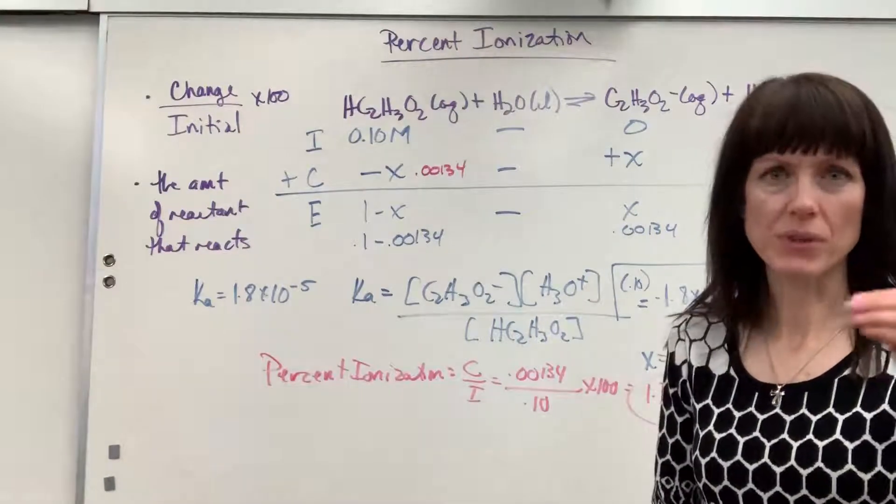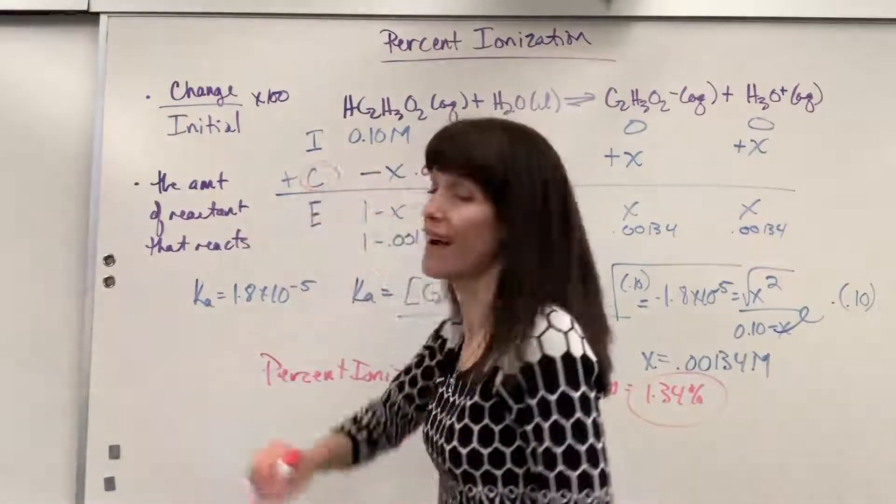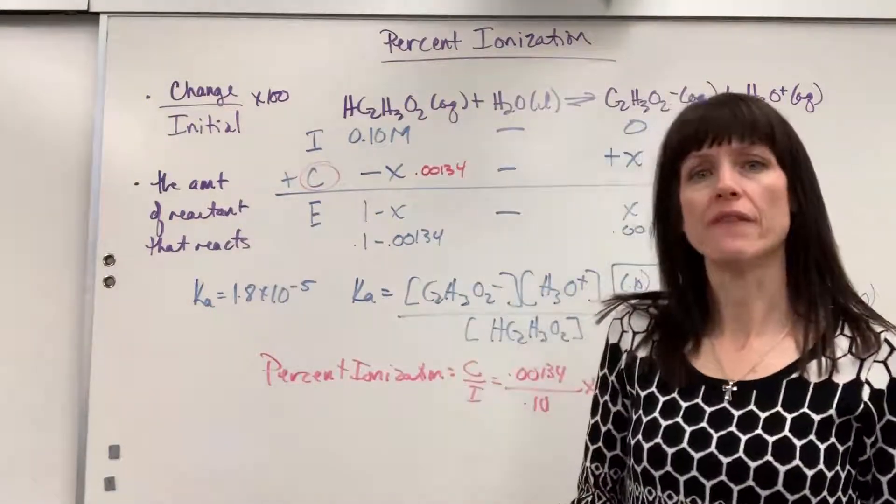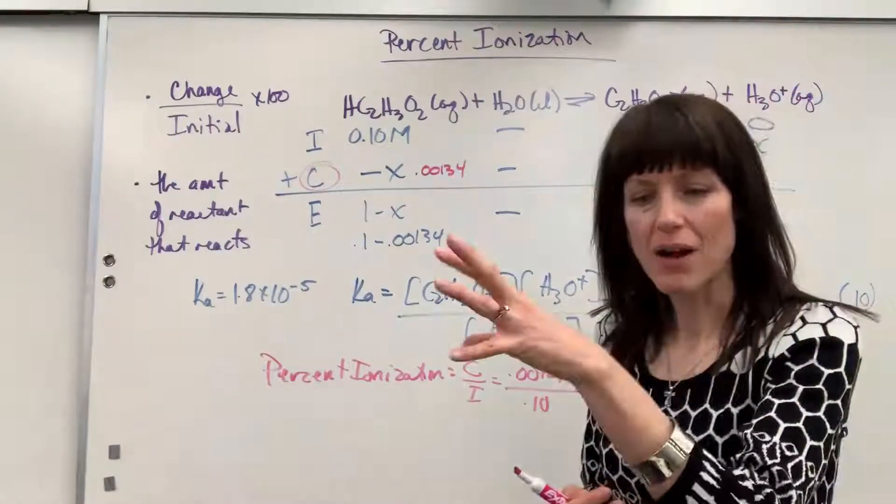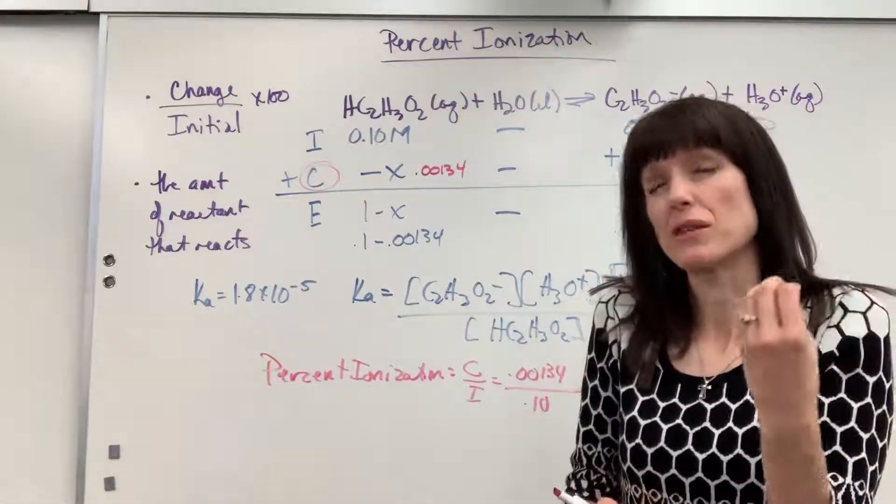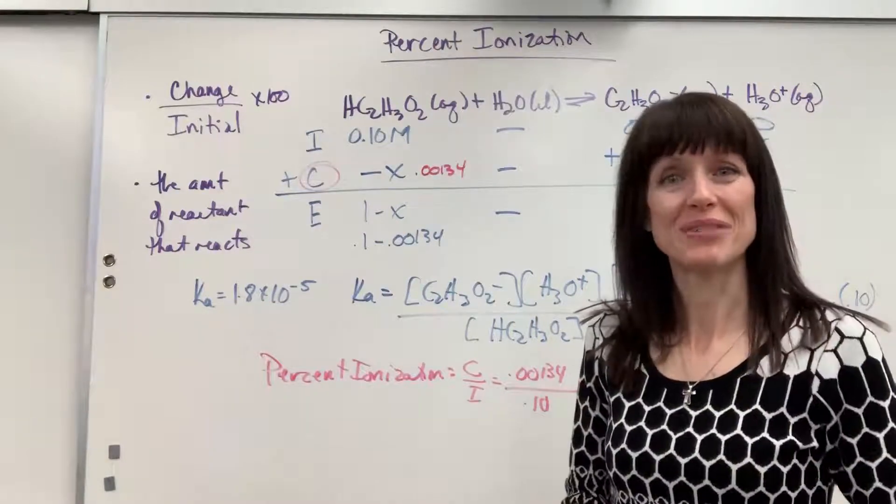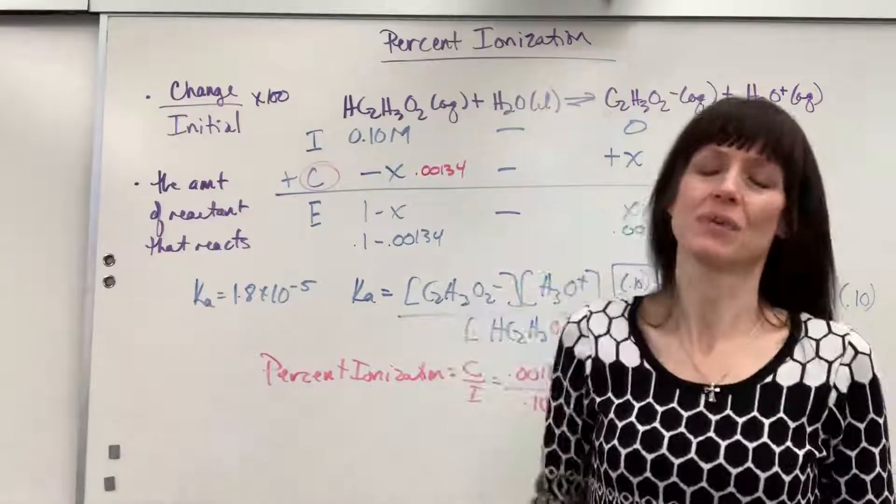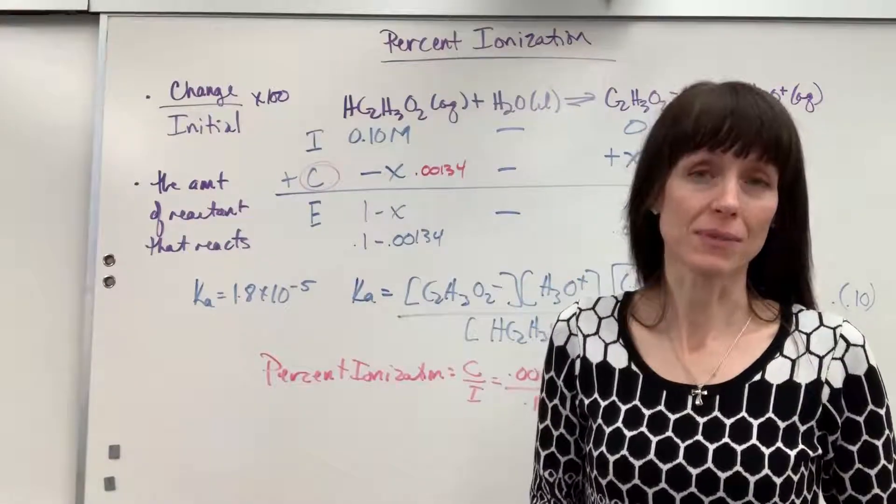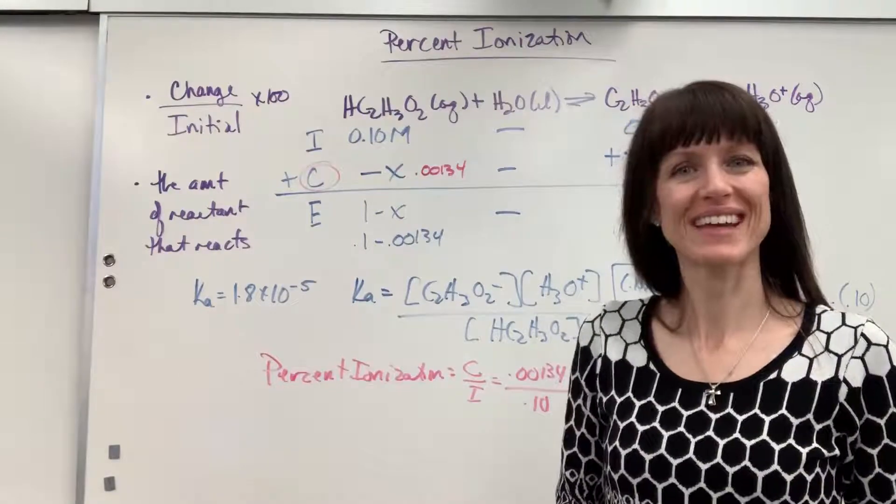So when you're asked that question, what percent ionizes, right away I want you to go to that. It's the change. And then you can muscle and work your way through it. The amount that reacts, that's the change. So to find the percent that reacted, change divided by initial, and you'll have it. Good work. If you have other questions on acid bases, please look at my playlist, Acid Base Equilibrium Under Lean Think. Thank you. Have a great day. Bye.